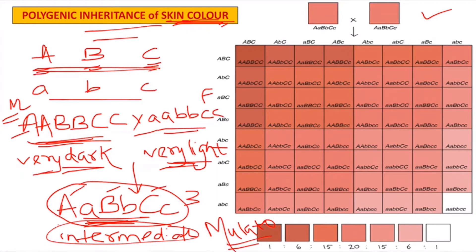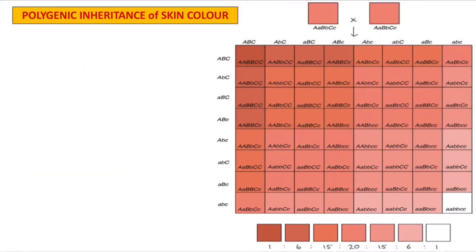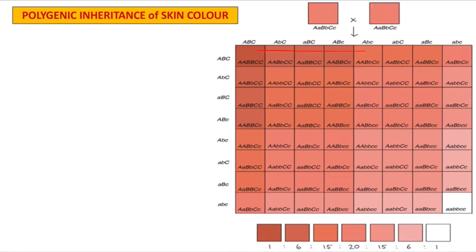Now we do a self-cross of the F1 offspring. This gives a complete Punnett square where each parent has 8 gametes, giving 64 combinations of offspring. Since there are three genes involved, we can call this a tri-hybrid cross.